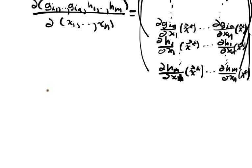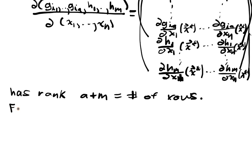We have to suppose that this has rank A plus M, the number of rows, that is this guy is onto. Now we form the Lagrangian.